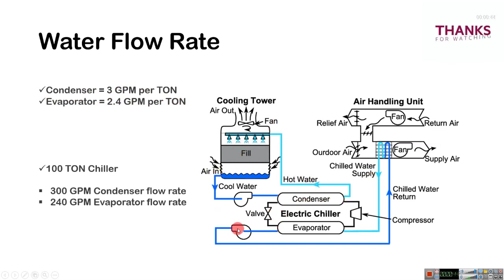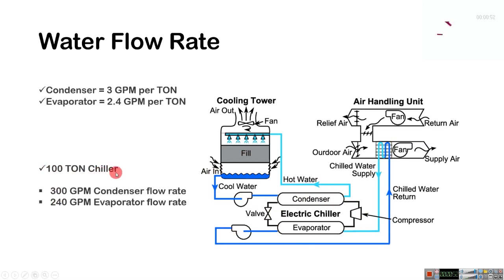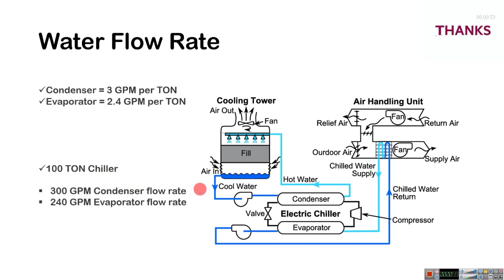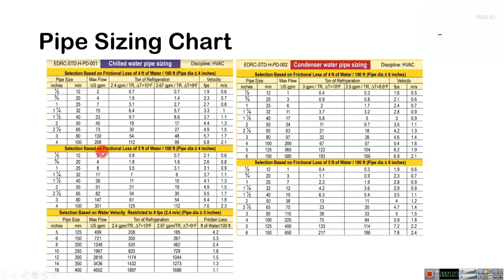The evaporator pipeline connects to the chilled water coil. Let's assume a 100-ton chiller — that gives us 300 GPM condenser water flow rate and 240 GPM for evaporator flow rate. We use this chart to calculate our pipe size.